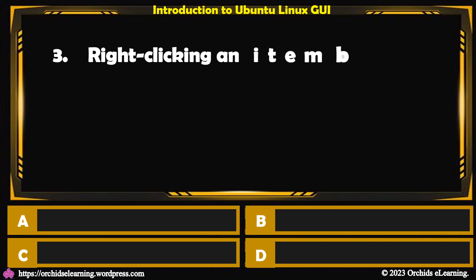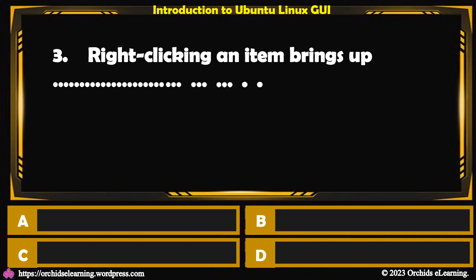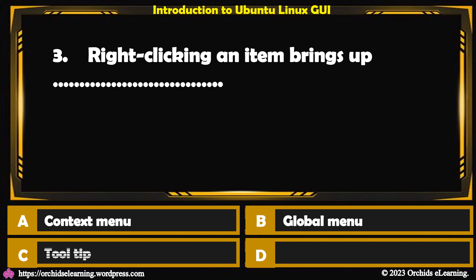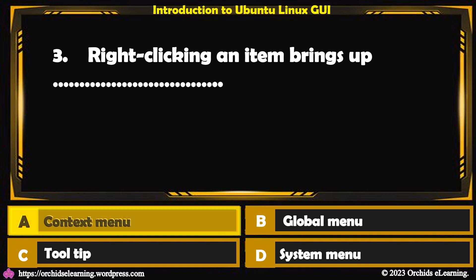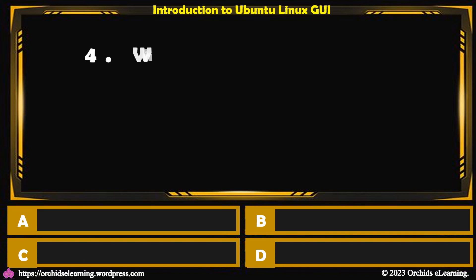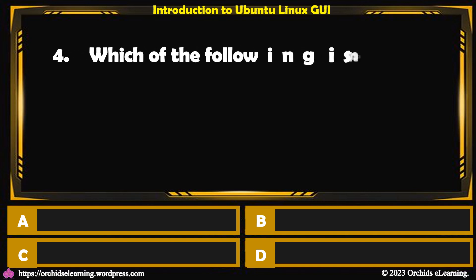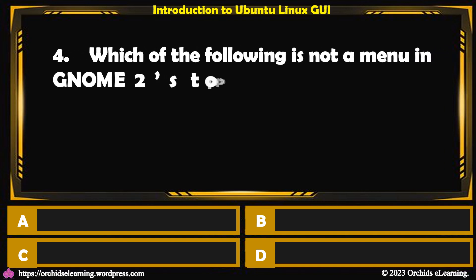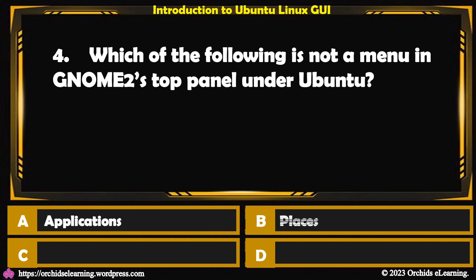Right-clicking an item brings up — the answer is a. Context menu.